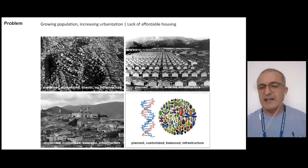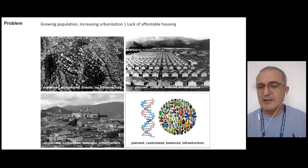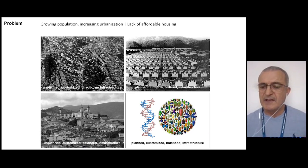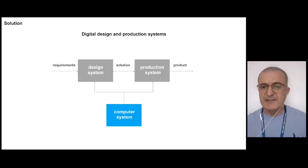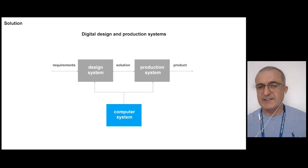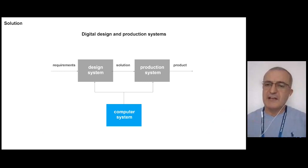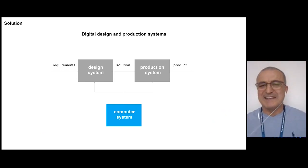To give an idea of our approach: think of the DNA chain in nature — a code that generates different creatures, each adapted to their environment. We want to bring this idea into architecture and urban planning. We came up with a conceptual framework including a design system that reads context and generates customized solutions, and a production system that quickly materializes the design output. What is new is using computers to control both systems.